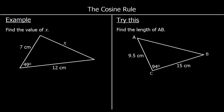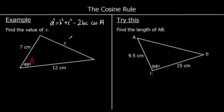The first question: find the value of x. We've got two lengths and the angle in between them — that's what we're looking for with the cosine rule. We're finding a length, so we're going to use the rule a squared equals b squared plus c squared minus 2bc cos A. The angle is big A, opposite little a which is what we're working out, and the other two are called b and c.